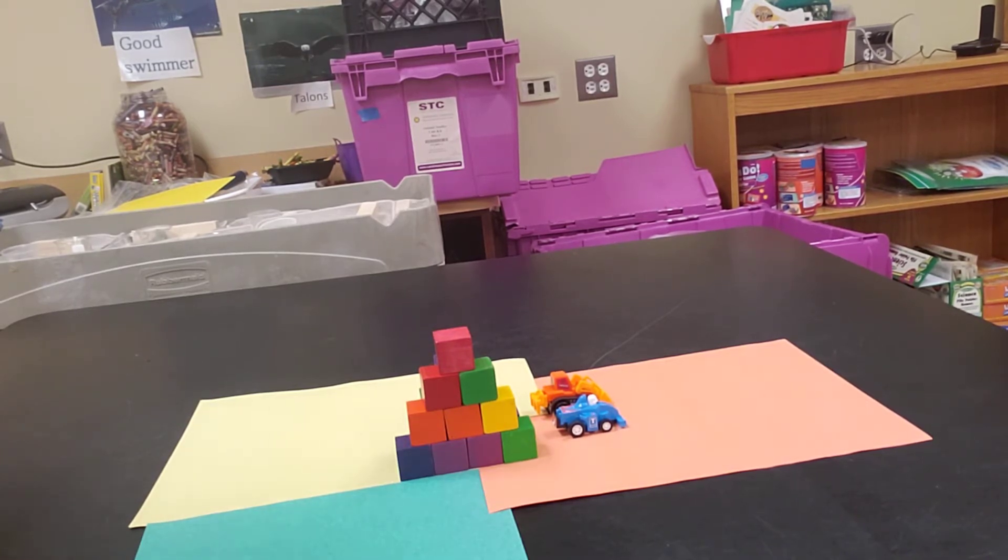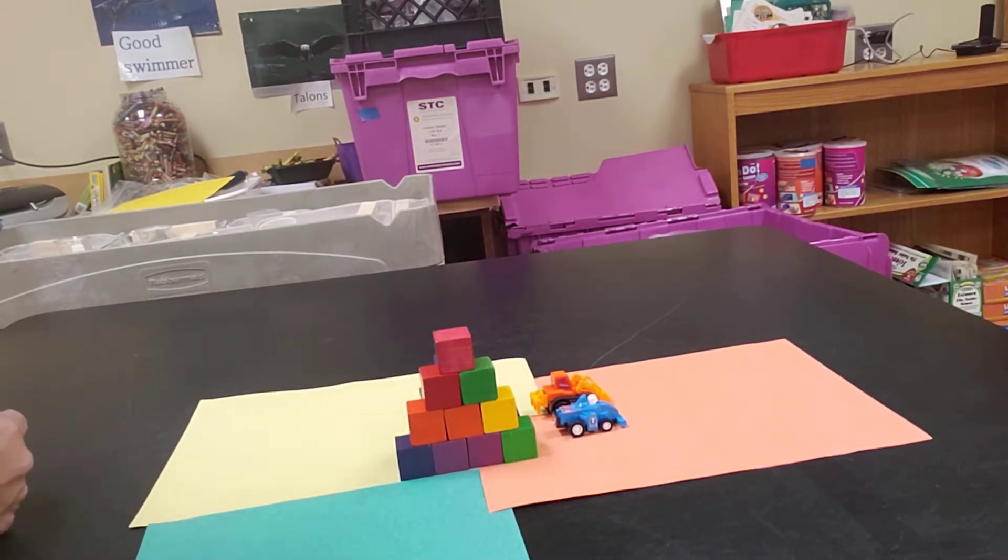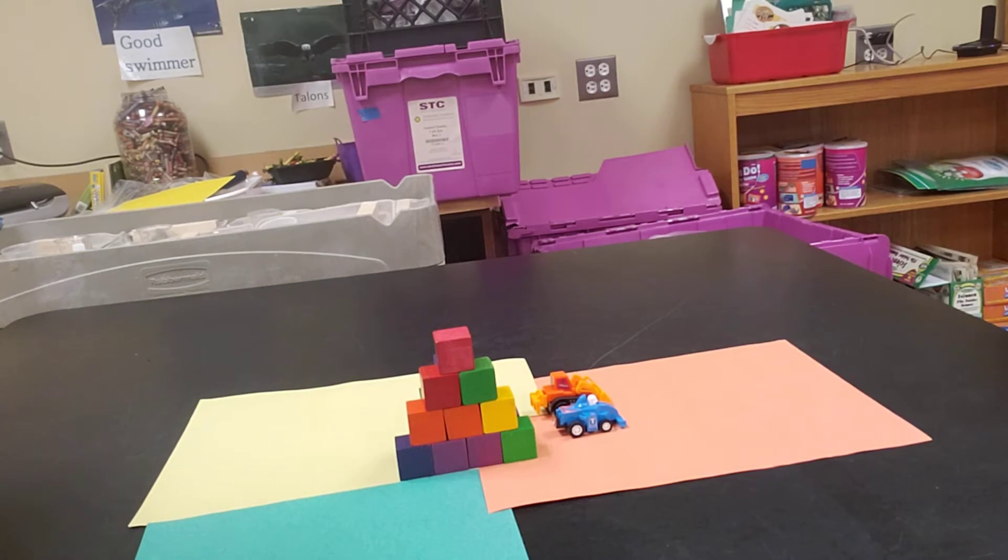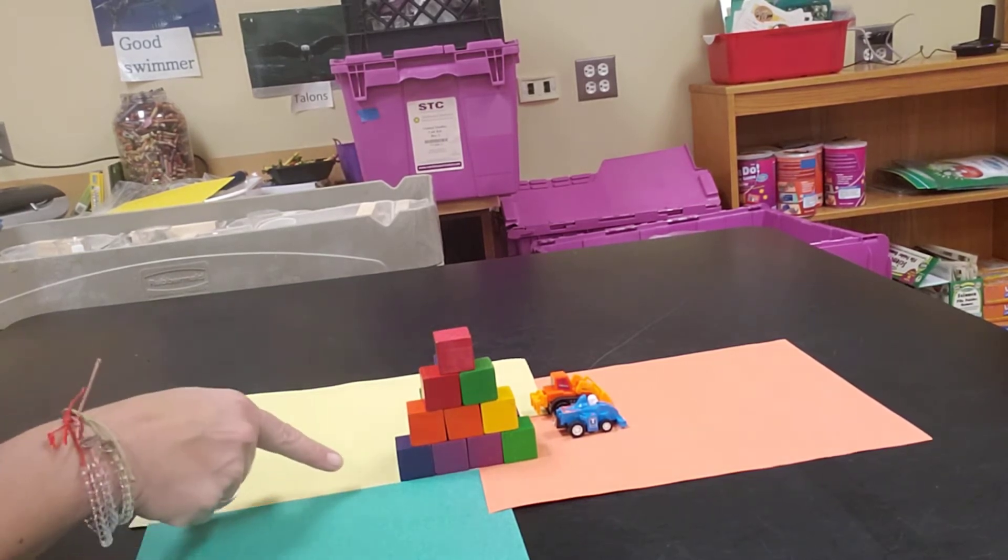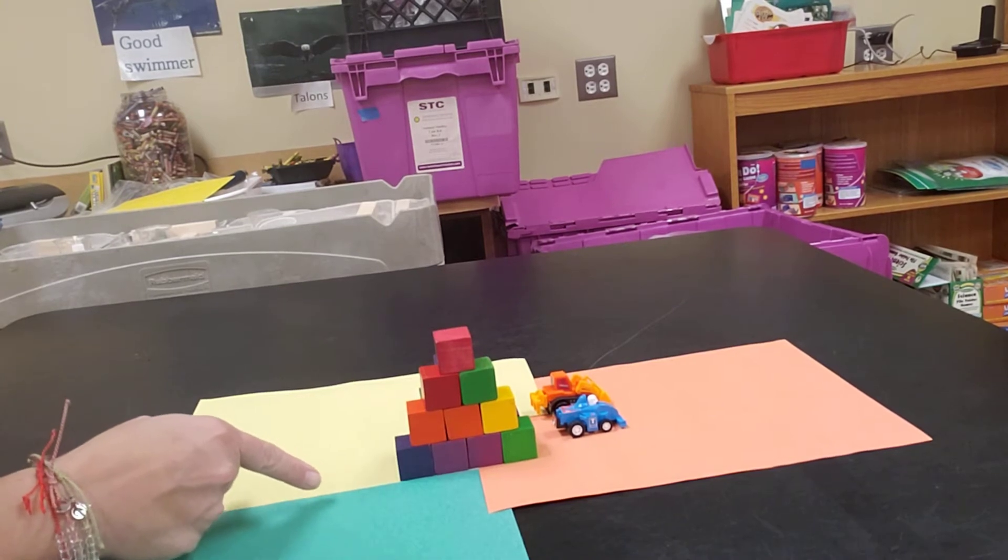The first one's going to be an earthquake. This paper here represents the plates that are on our earth, and when these plates come together and they meet, this is where earthquakes can happen.